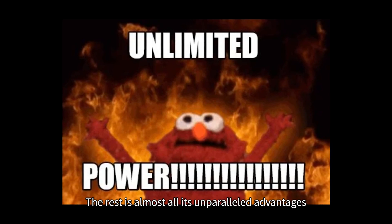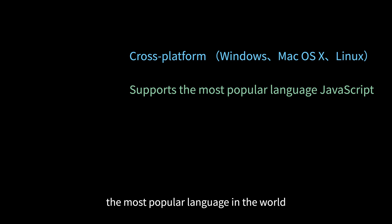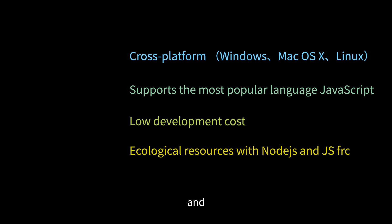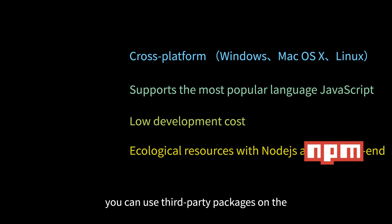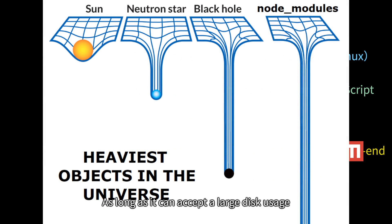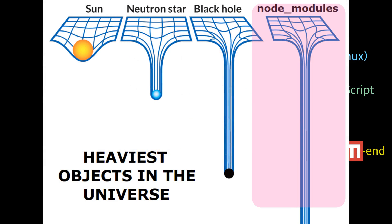However, all of these should still be affordable for today's computer performance and configurations. The rest is almost all unparalleled advantages. First of all, cross-platform: Windows, macOS, and Linux. It supports JavaScript, the most popular language in the world. The development cost is relatively low, and you can enjoy the Node.js ecosystem and front-end open-source resources. For example, you can use third-party packages from npm and put them in the node_modules folder, as long as you can accept a large disk usage.